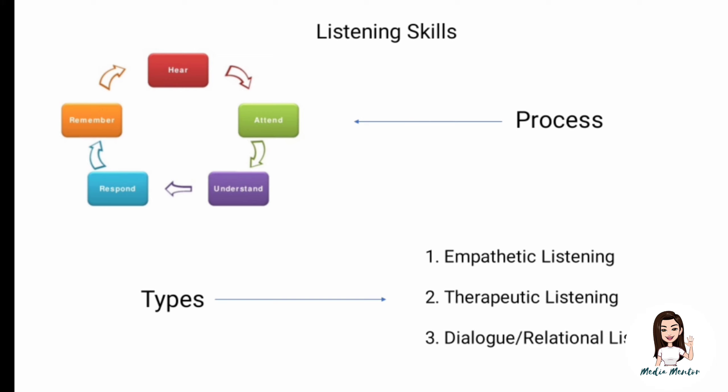Next are listening skills. There are five major parts in the process of listening. The receiver first hears the information, then attends to it by giving attention, tries to understand what is being said, responds by giving feedback, and remembers it. The cycle then goes back to the source and keeps continuing.